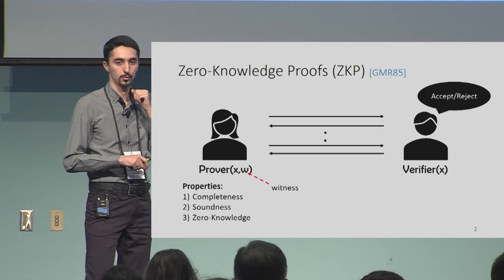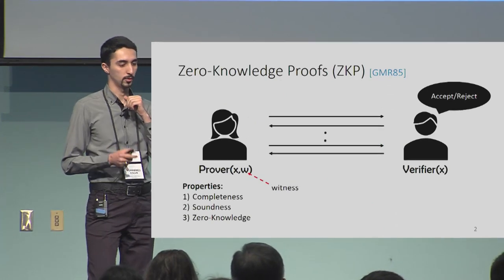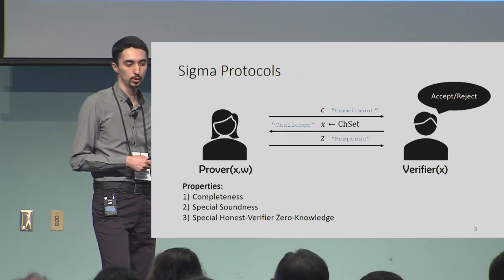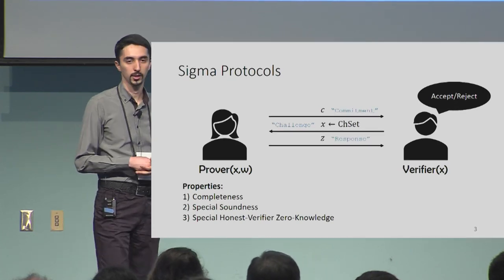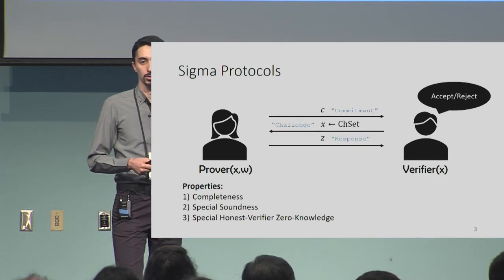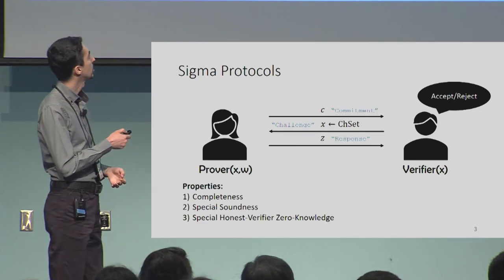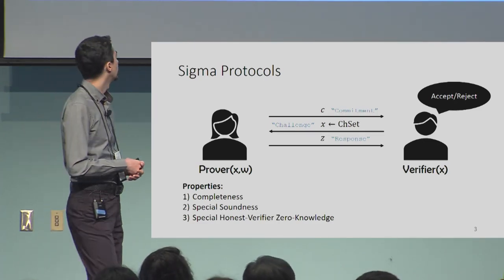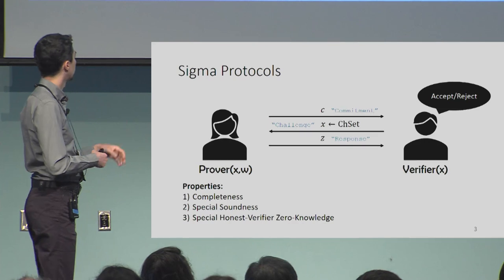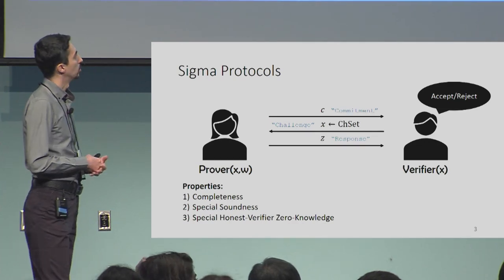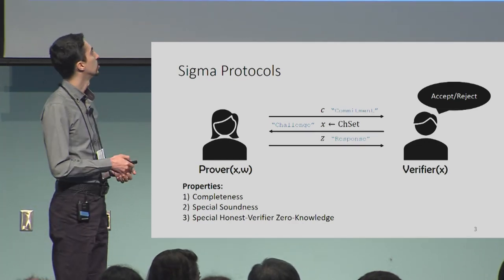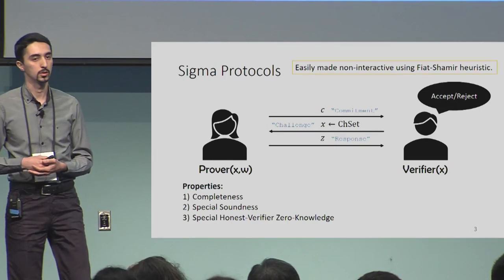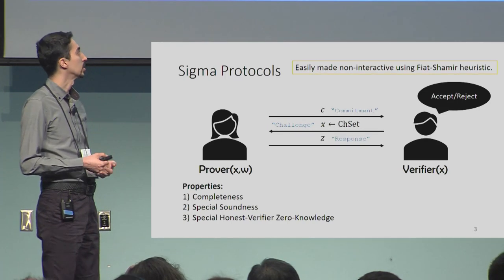The type of zero-knowledge proof we particularly focus on in this work is called the Sigma protocol. It has this three-move structure: commitment, challenge, and response, with slightly different properties. We can easily make this non-interactive using the so-called Fiat-Shamir heuristic.